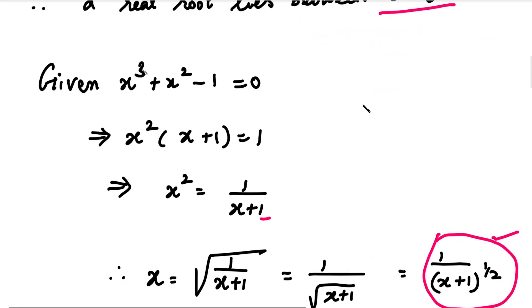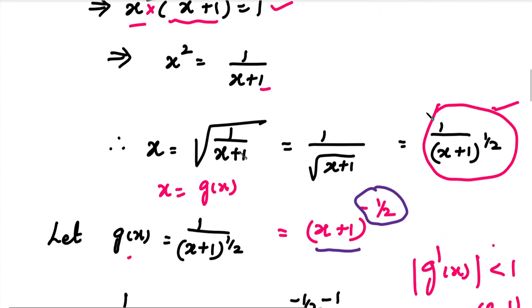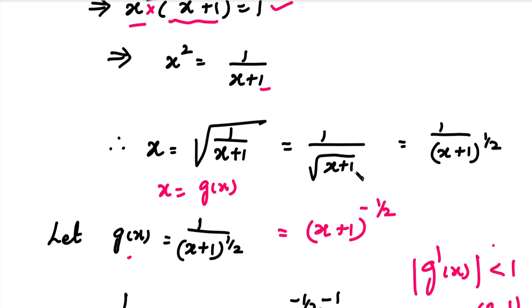The equation is x³ + x² - 1 = 0. We take x² to the right side. Dividing both sides by x², and taking the power 1 by 2, we get x = 1 divided by root of (x+1), which is our g(x).